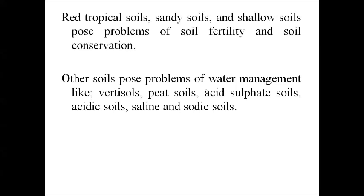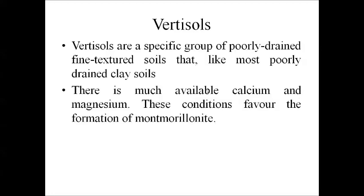Aaj hum do type ki soil discuss karenge: first hai Verti soil, second hai Peat soil. Verti soil kya hai — poorly drained, fine textured soil. Iske particles bahut chote hote hain. Poorly drained isliye kyunki gases exchange poor hai. Jaise hi water ki stagnation hoti hai, water deep percolate nahi hota, drainage difficulty se hoti hai, isliye sub-drainage karni padti hai.